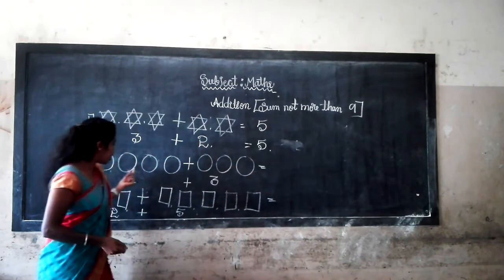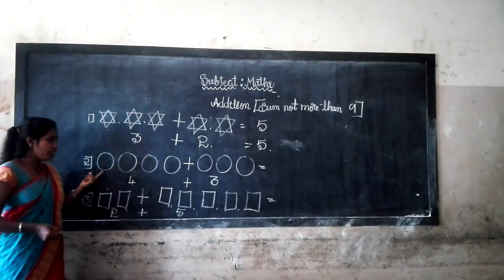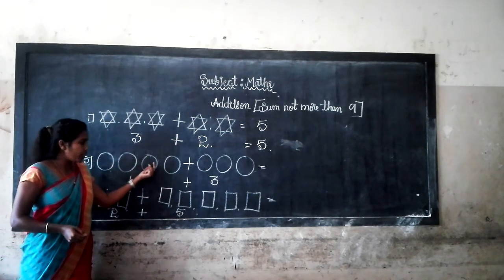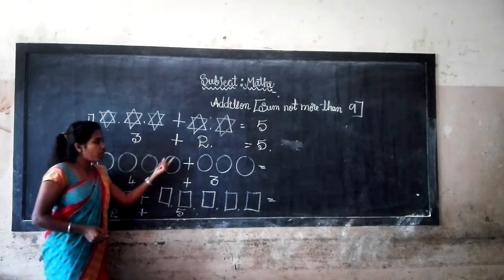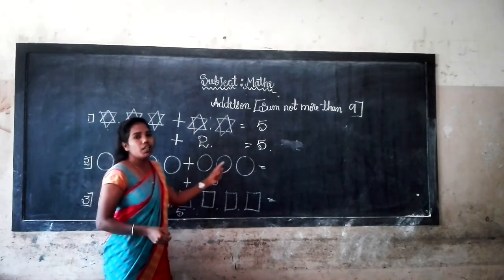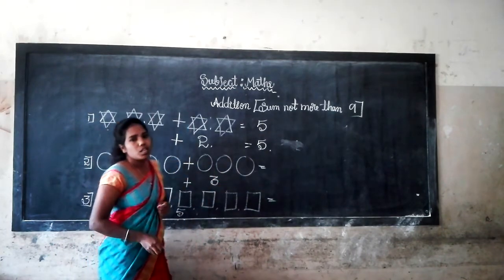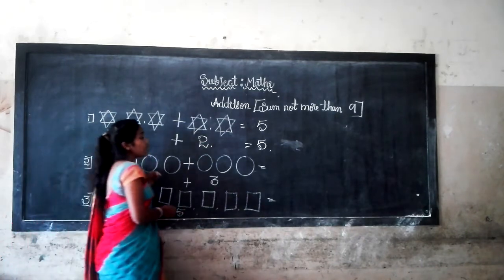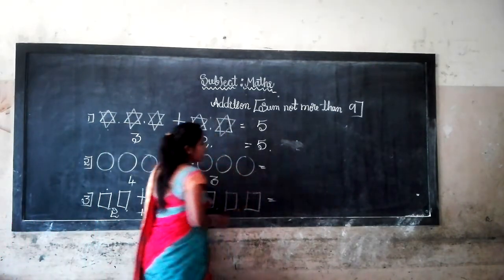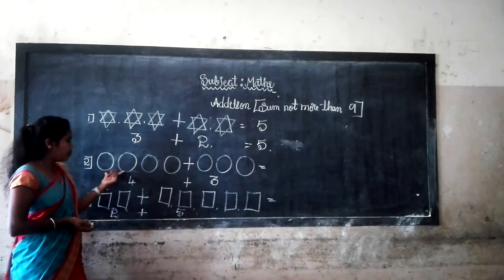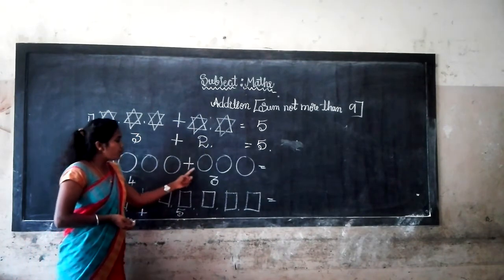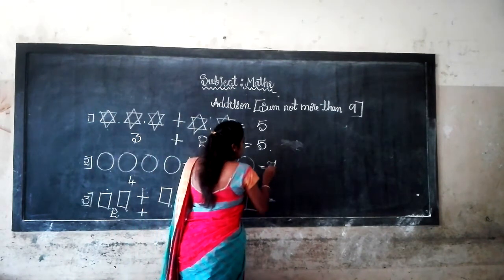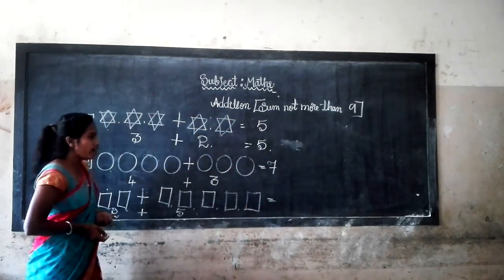Then next, let's count the second picture: one, two, three, four. Plus one, two, three. So four plus three — what is the answer? Four plus three equals — let's count: one, two, three, four, five, six, seven. Four plus three is equal to seven.